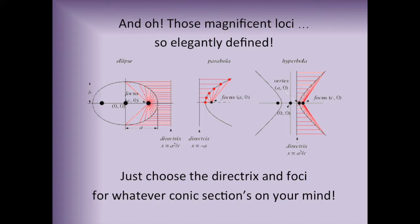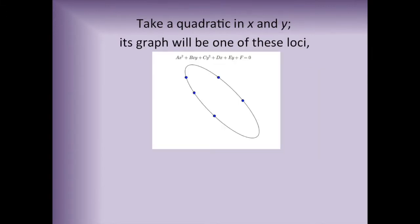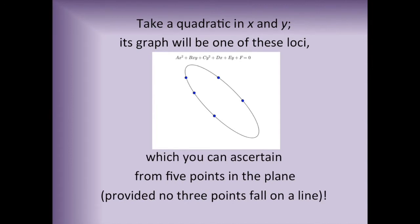for whatever conic sections are in your mind. Take a quadratic in x and y; its graph will be one of these loci, which you can ascertain from five points in the plane, provided no three points fall on a line.